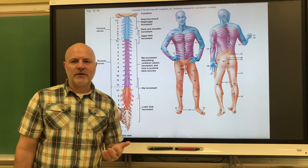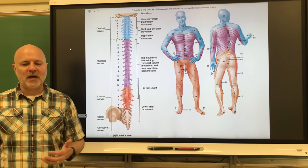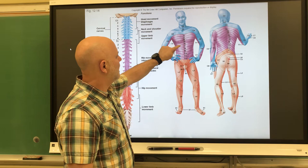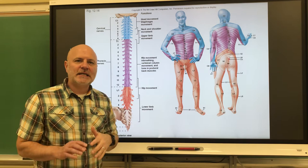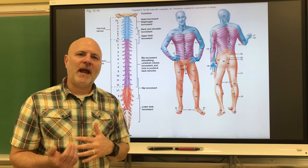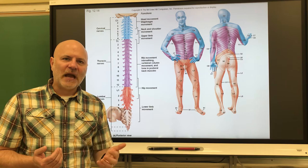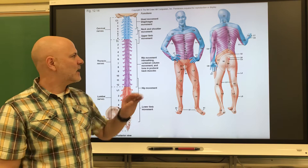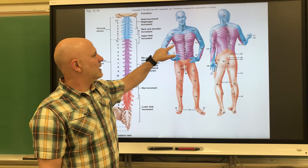Another thing associated with sensory neurons are dermatomes — specific areas of the skin in which a spinal nerve receives sensory input. These do overlap. If you've heard of shingles, it's chickenpox that comes out later in life. The chickenpox virus attaches its DNA onto sensory neuron DNA, so when it reactivates, it comes out where that sensory nerve innervates — which is why people with shingles get them in these strips.